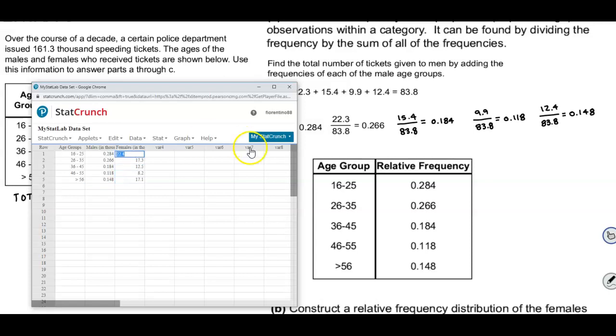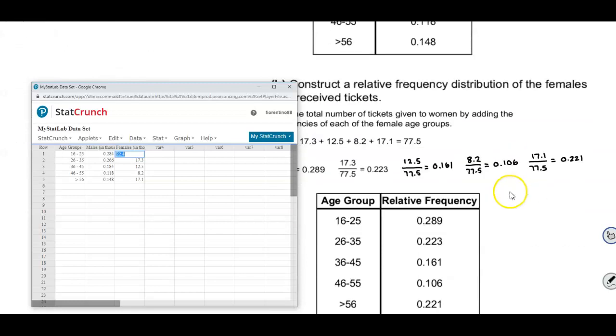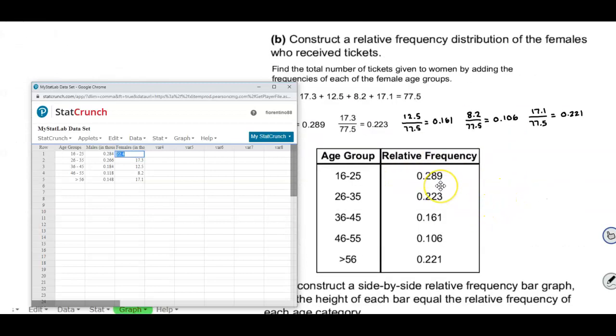And then we're going to scroll down a little further and put in the female relative frequency. So we're going to put in 0.289, 0.223, 0.161, 0.106, and then 0.221.